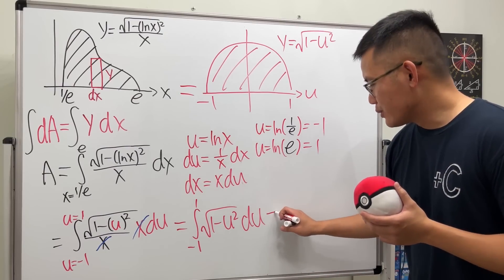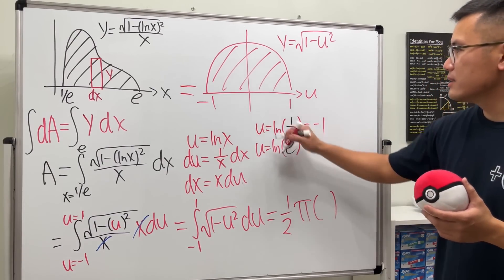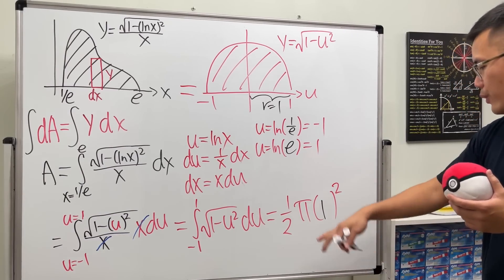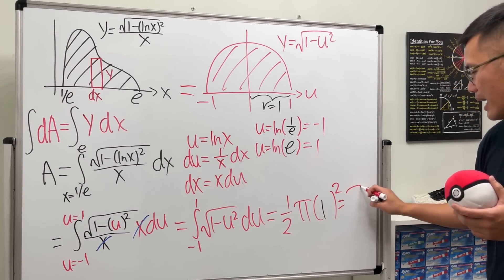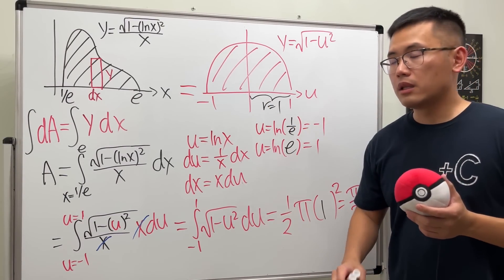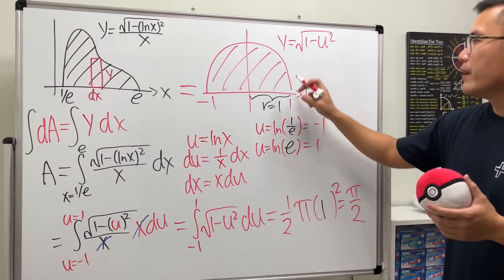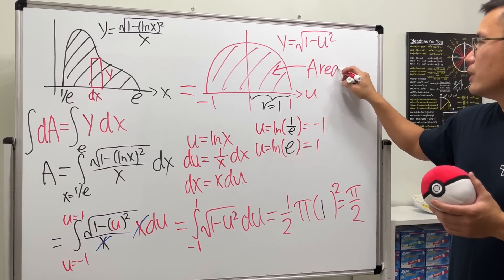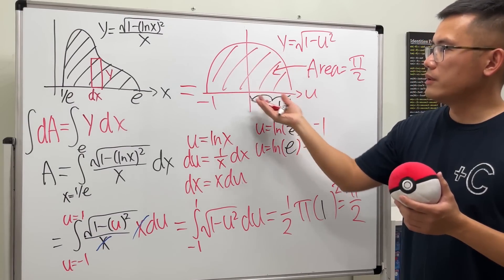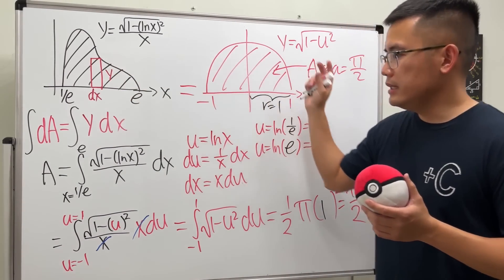Do we know how to find the area of a semicircle? Yes we do. This right here is just one-half of π times the radius, which is 1. So we can just do 1 squared, work that out, and we get π/2. You see, after the substitution, if we pick the right one and are able to change a weird shape into something that we know much better, we might not even need to do any crazy integration technique to figure out the area of this shape.